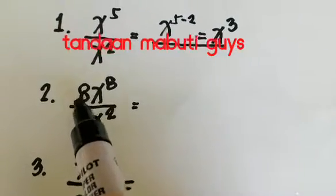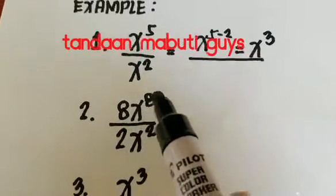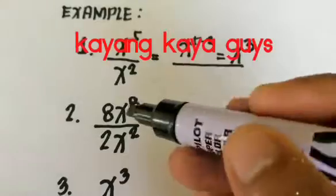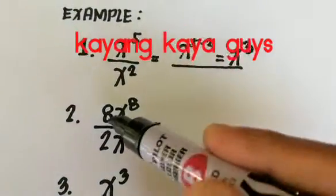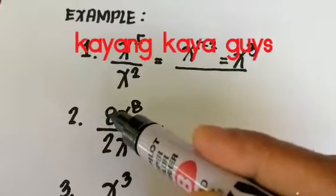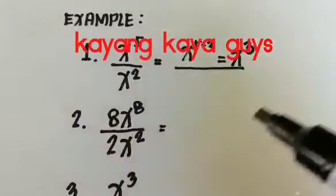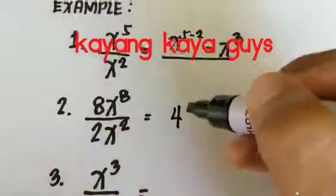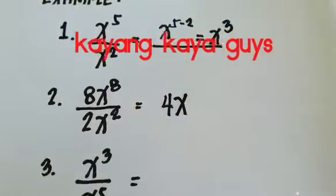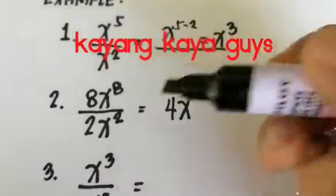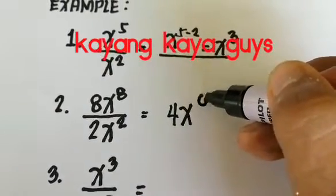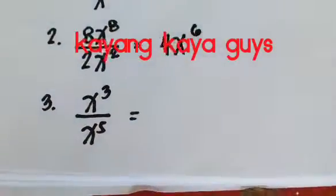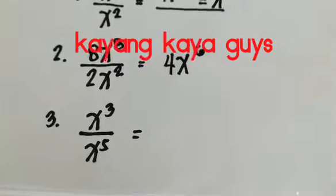How about if there is a coefficient? For example: 8x raised to 8 divided by 2x squared. You divide the coefficients as normal numbers — 8 divided by 2 is 4. Then copy the base x and subtract the exponents: 8 minus 2 equals 6. So the answer is 4x raised to 6.